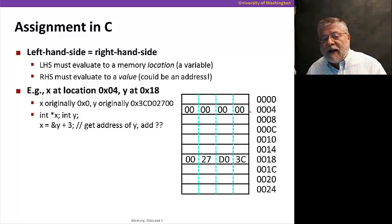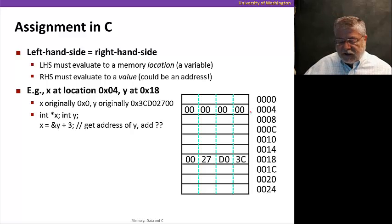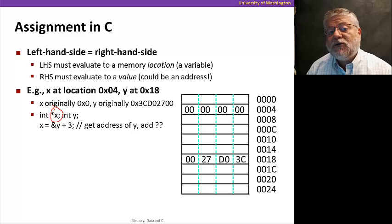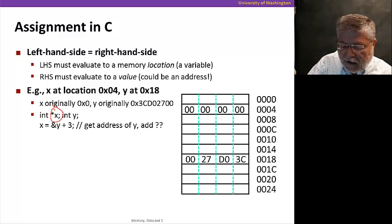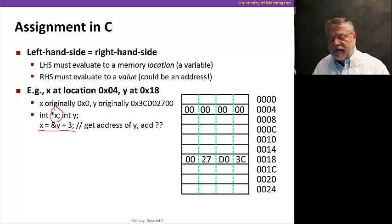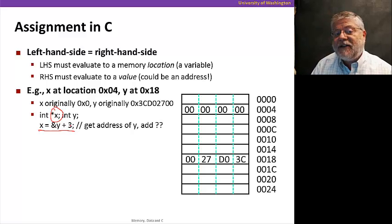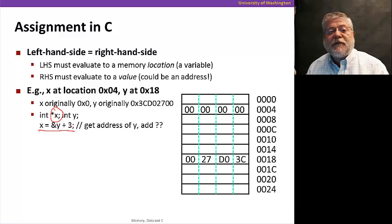Okay. Another example. This time, you'll notice our declaration is a little bit different. We've declared now, rather than an integer X, an integer pointer X. So we're going to interpret the value stored at X, at location four, as an address. In this case, you'll notice our assignment statement also looks a little different. Now we have to get an address to go put there. Well, what we're going to do is get the address of Y and add three to that.